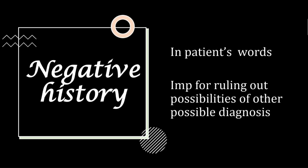Then comes the negative history, again in the patient's words. This is important for ruling out possibilities among the possible diagnoses. For example, if HOPI gives four possible diagnoses, the negative history can help eliminate two of them, narrowing down the options.